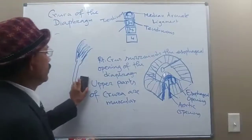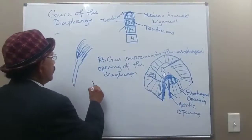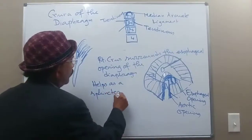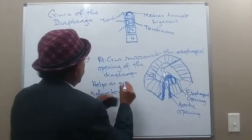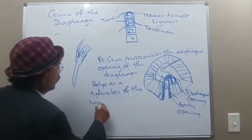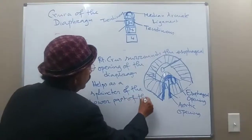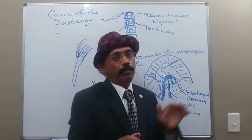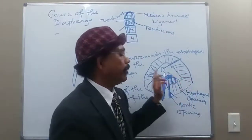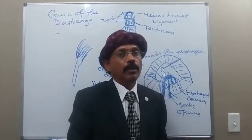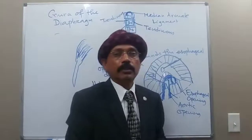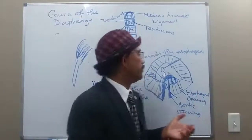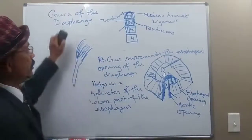The right crus acts as a sphincter of the lower part of the esophagus. There is no anatomical sphincter in the wall of the esophagus itself, but because this muscle surrounds the esophageal opening of the diaphragm, it works as a sphincter that regulates the flow of food. It is also essential for vomiting — it must relax so that a person can vomit.